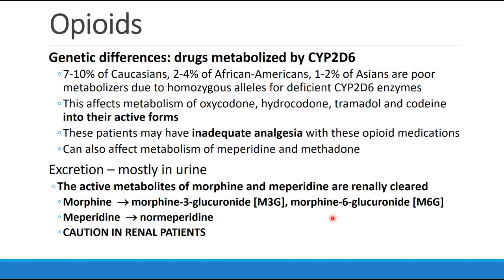Opioids are primarily excreted in the urine. This is especially significant for drugs like morphine and meperidine, whose metabolites are active. Morphine has morphine-3-glucuronide and morphine-6-glucuronide; meperidine has normeperidine. In patients with significant renal disease, accumulation of these active metabolites can lead to substantial side effects, so these drugs should be used carefully in patients with renal disease.